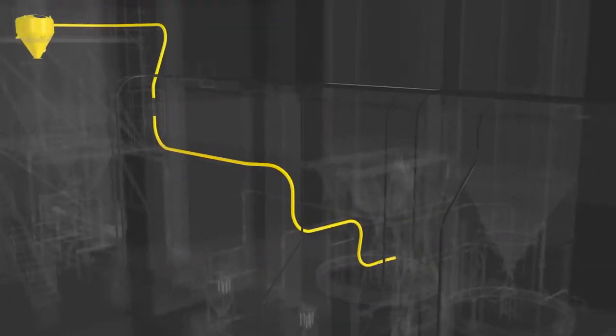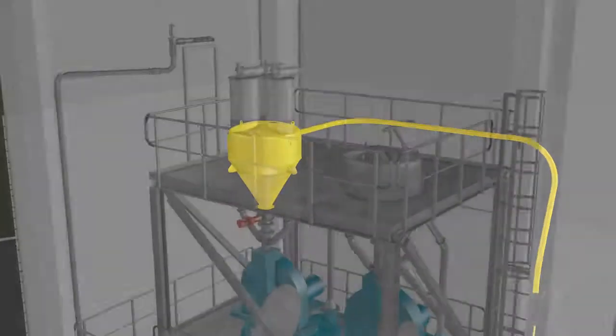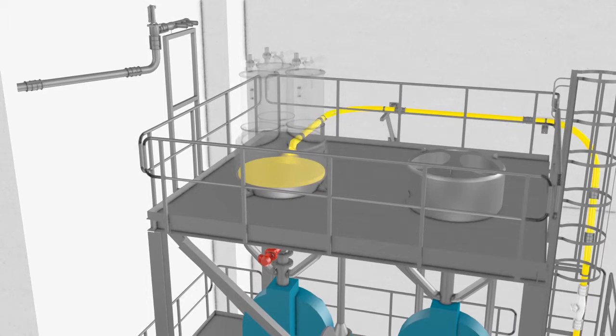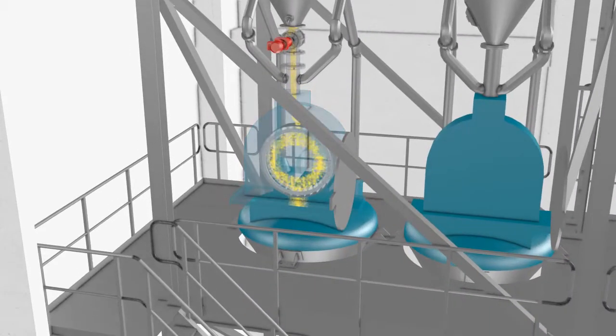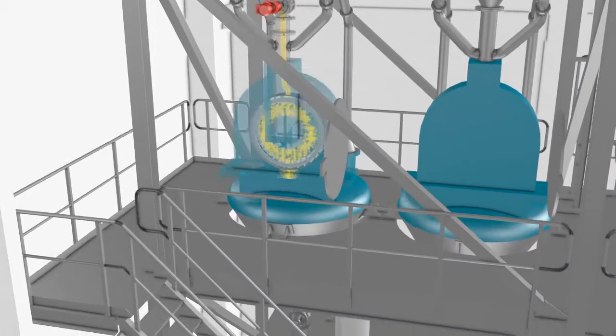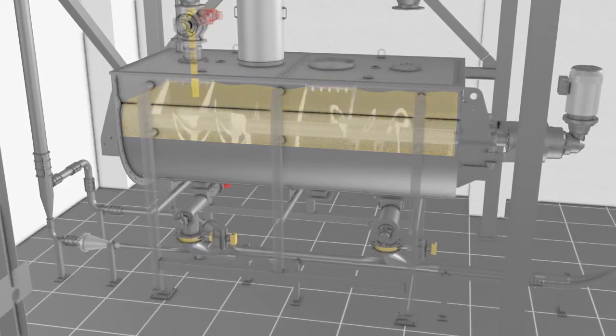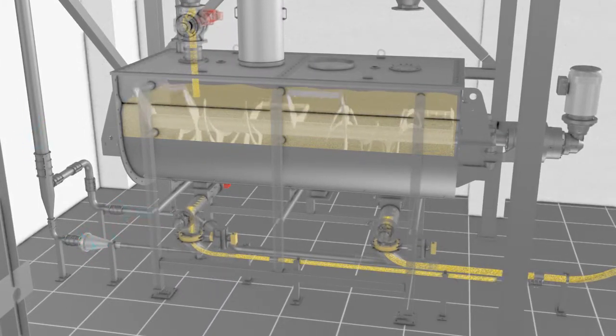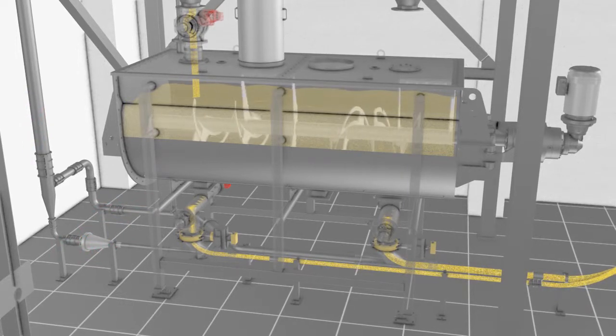A pneumatic conveying system then transports the sugar towards a grinder, where it is transformed into icing sugar. The blender placed underneath the grinder ensures no lumps can be formed and homogenizes the product before dosing and conveying it towards the mixing area.